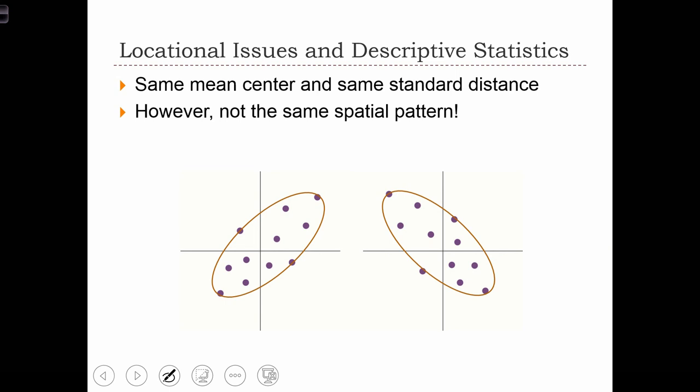Here's another example where we have the same amount of absolute dispersion or the same amount of isotropic dispersion using the standard distance statistic, but it's very clear here that the standard deviational ellipse would be able to pick up on the differences between these two point patterns.